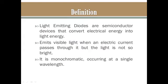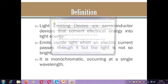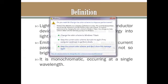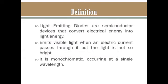Definition: Light-emitting diodes are semiconductor devices that convert electrical energy into light energy. We have conductors or semiconductors that convert electrical energy into light energy. When the electrical current passes through the semiconductor, it emits visible light, and we focus on visible light because we treat with light therapy. The light has the same energy and same wavelength — it is not amplified light like a laser.